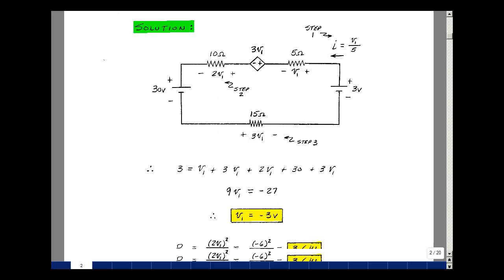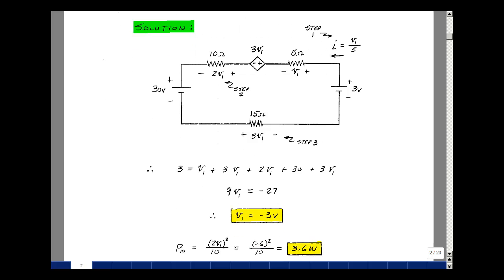Okay, the power that's dissipated in the 10 ohm resistor, you can find a couple different ways. We could do it as V squared over R, V times I, or I squared R.